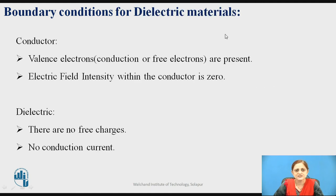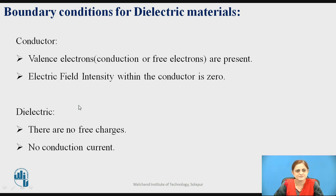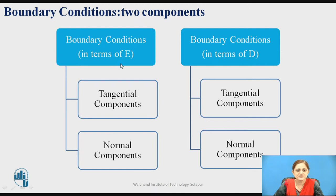Here we are checking the boundary conditions for the dielectric medium. In a conductor, valence electrons — also called conduction electrons or free electrons — are present, and the electric field intensity within the conductor is zero. In a dielectric medium, there are no free charges and therefore no conduction current flows. Boundary conditions can be defined in two components: in terms of E (electric field intensity) and D (electric flux density), each having tangential and normal components.